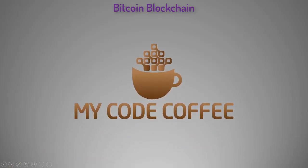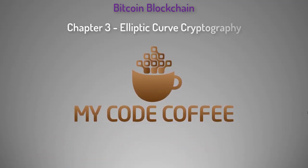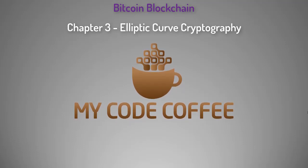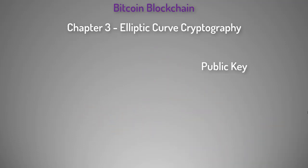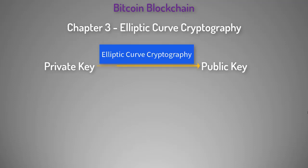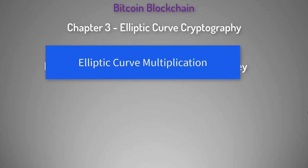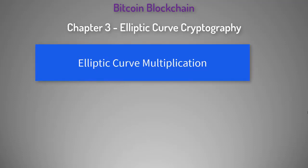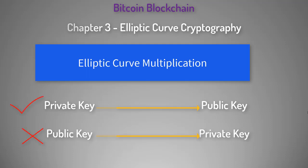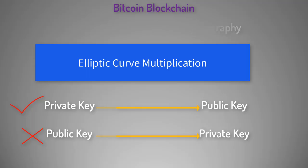Hello and welcome to myCodeCoffee. This is chapter 3 in the series of Bitcoin blockchain. In the previous chapter I explained that Bitcoin public key is generated from private key using elliptic curve cryptography, or to be precise, elliptic curve multiplication. In this chapter I will explain what elliptic curve multiplication is, and why you can't get the private key from the public key. Let us find out.